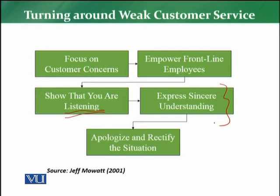The next stage is to apologize and rectify the situation. There are two parts here: first, you have to apologize to the customer. Whether it is the retailer's mistake, the representative's mistake, or even the customer's own mistake, you still have to apologize — because the customer is the king and everyone is working for the customer. You accept the issue, apologize, and then offer a rectified solution. The organization must have plans in place so that a solution can be given to the customer immediately.